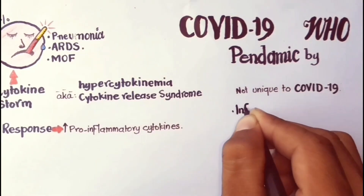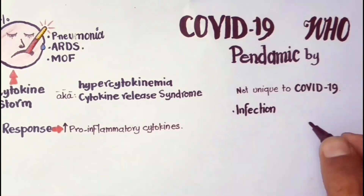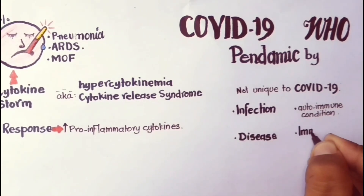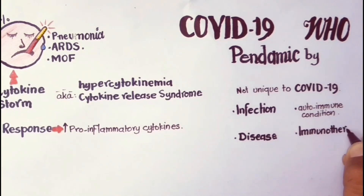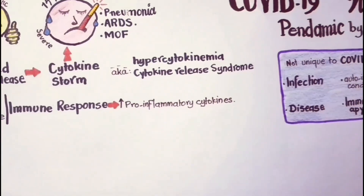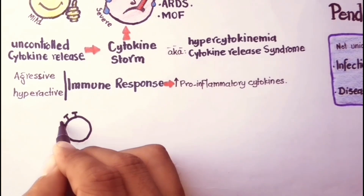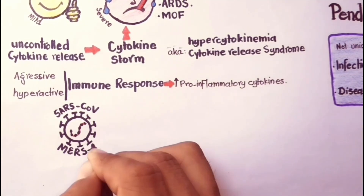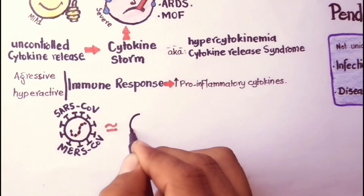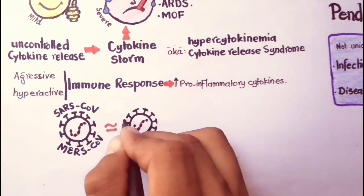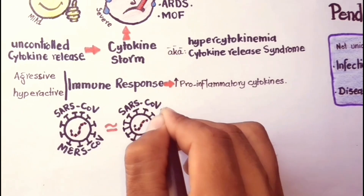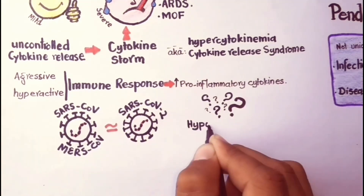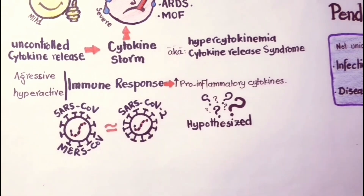Cytokine storm, also known as hypercytokinemia or cytokine release syndrome, is an aggressive or hyperactive immune response with the release of large amounts of pro-inflammatory cytokines, which is not unique to COVID-19. It can also occur due to infection, autoimmune conditions, or other diseases, and may occur after treatment with some types of immunotherapy. Due to the SARS-CoV-2 genome being closely related to SARS-CoV and MERS-CoV, and accumulated clinical and experimental data on those coronavirus infections, the interaction between the host immune response and SARS-CoV-2 is mostly hypothesized by researchers.